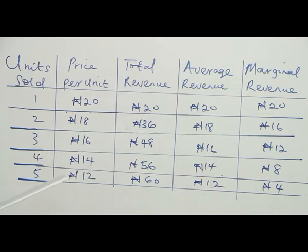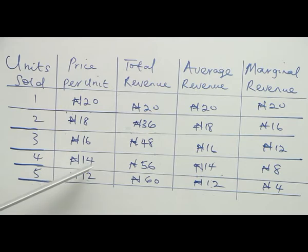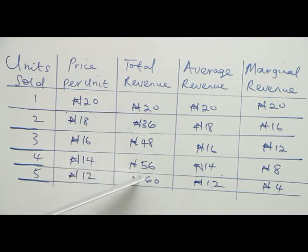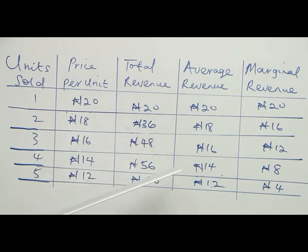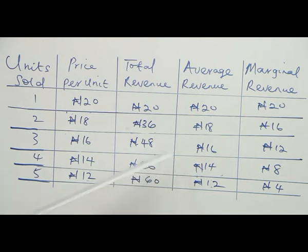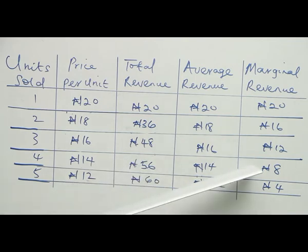When four units were sold at 14 naira per unit, the total revenue increases from 48 naira to 56 naira. Average revenue is still 14 naira, because average revenue is always equal to price. The change from 48 to 56 is 8, so marginal revenue is 8.